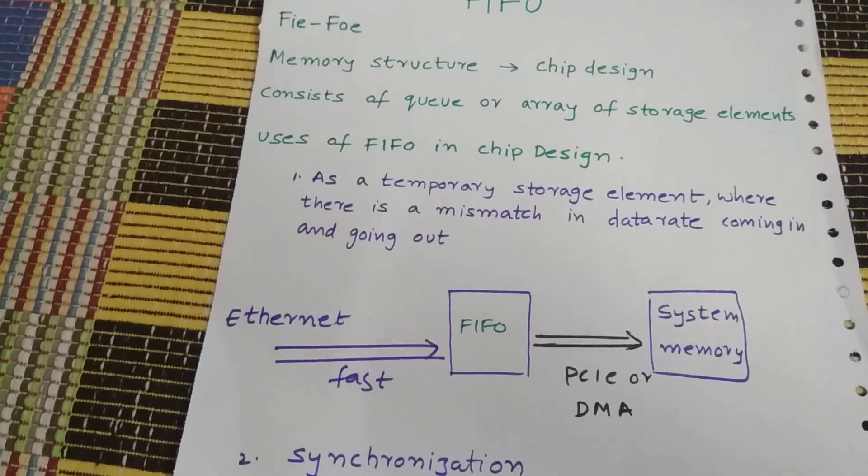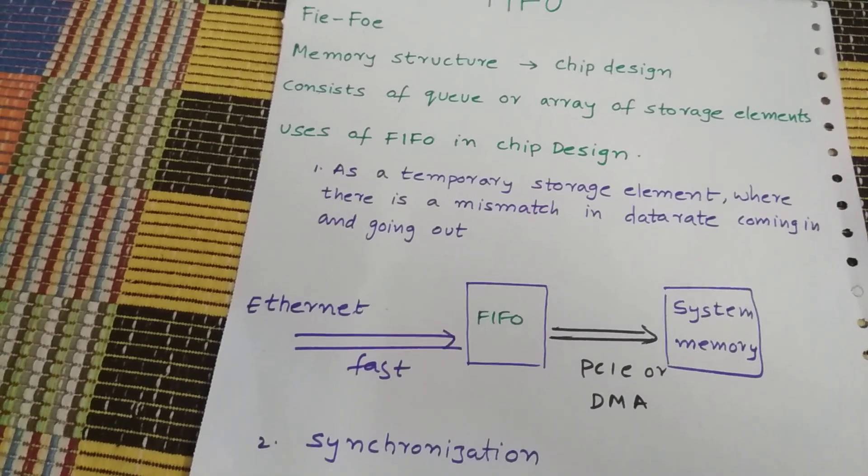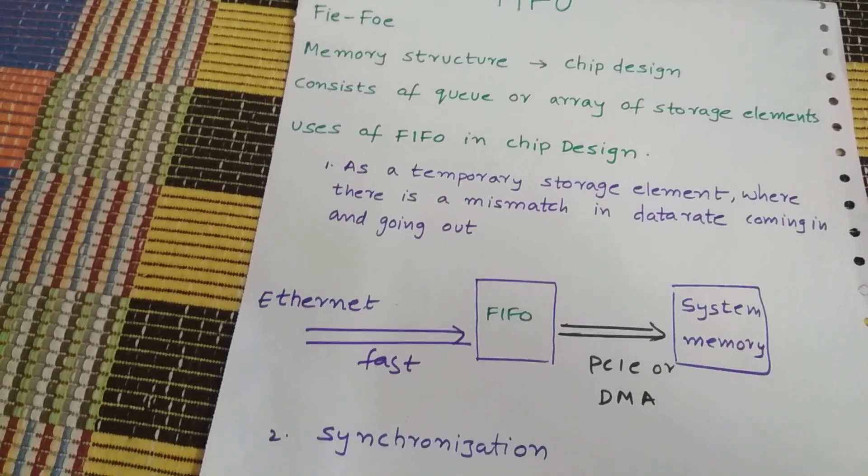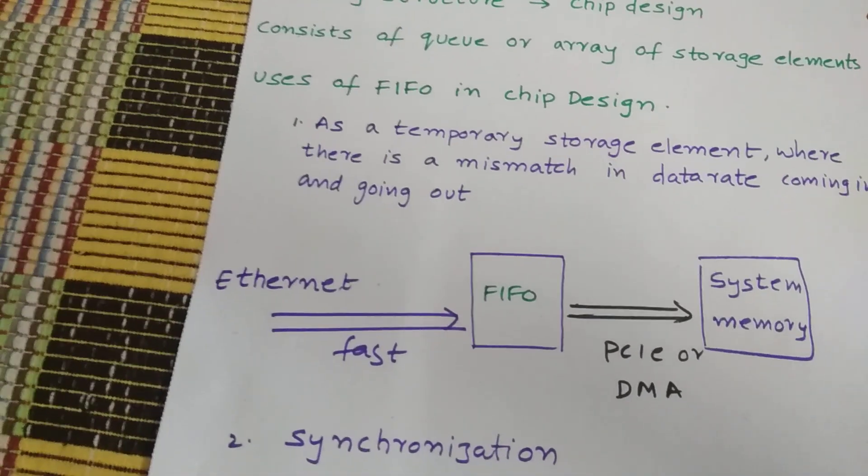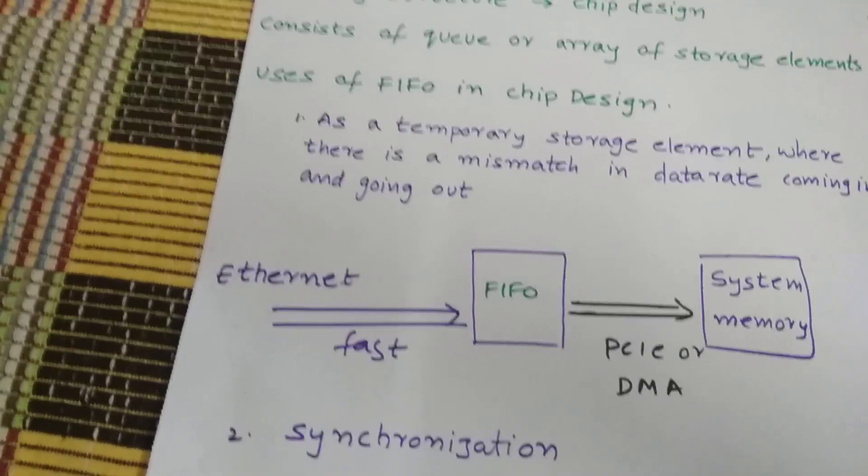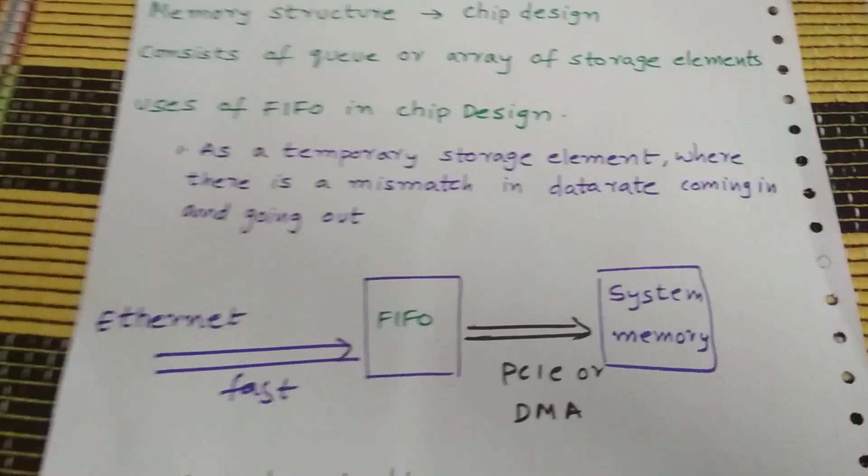An Ethernet controller dumps the data it received from the network to a FIFO. It dumps the data, whatever it receives from the network, into the FIFO.